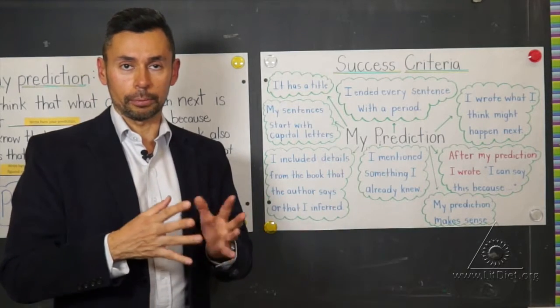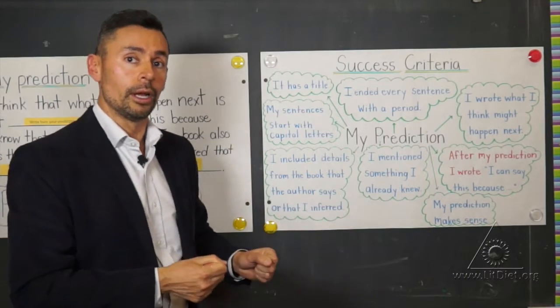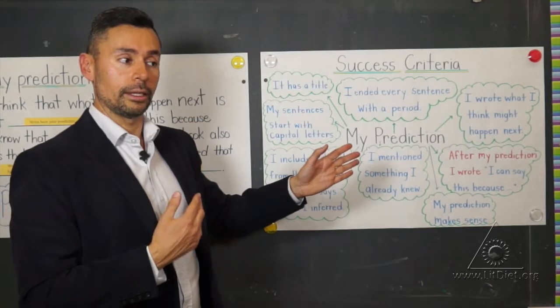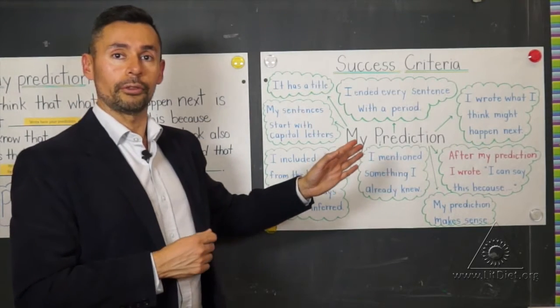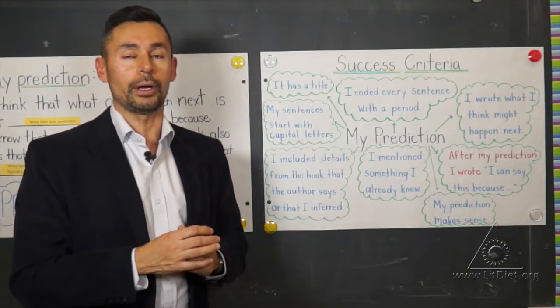And then what I do is I come with them here. All right, let's check the success criteria together. Did you do this? And they look at, yeah, I did that, okay, good, perfect, let's move to the next one. Oh, no, I forgot that. Okay, so you go back and do it.